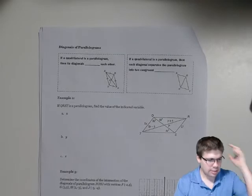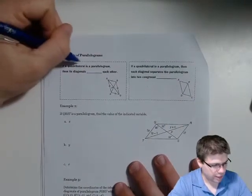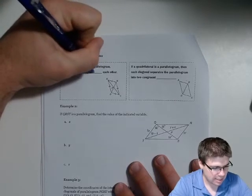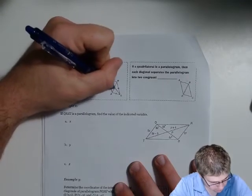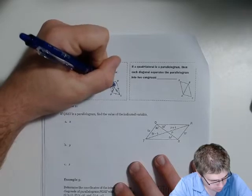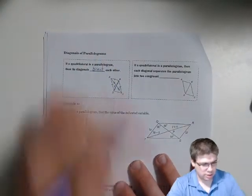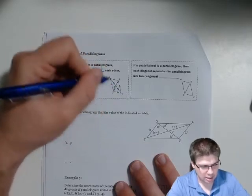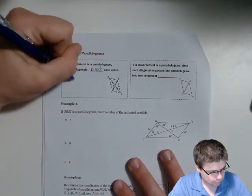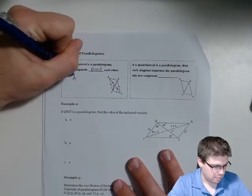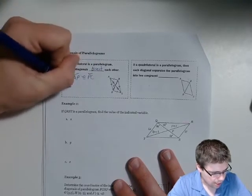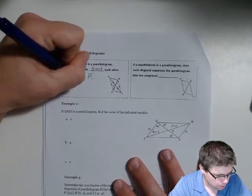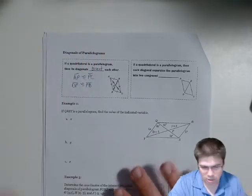Continuing on, we've got a few more properties about the diagonals of a parallelogram. If a quadrilateral is a parallelogram, then its diagonals bisect each other. P is the midpoint of those segments — that's the definition of bisectors. So we could say segment AP is congruent to segment PC, and DP is congruent to PB.